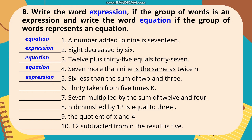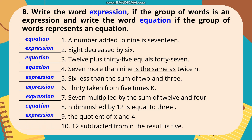Number 6: 30 taken from 5 times K. Answer: Expression. Number 7: 7 multiplied by the sum of 12 and 4. Answer: Expression. Number 8: N diminished by 12 is equal to 3. Answer: Equation. Number 9: The quotient of X and 4. Answer: Expression. Number 10: 12 subtracted from N, the result is 5. Answer: Equation.